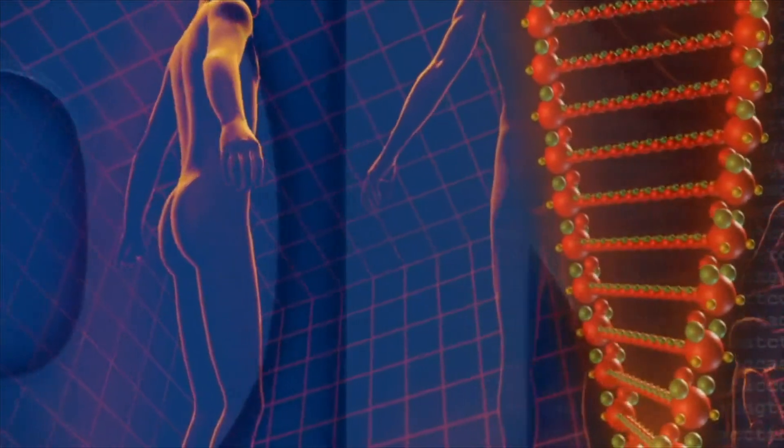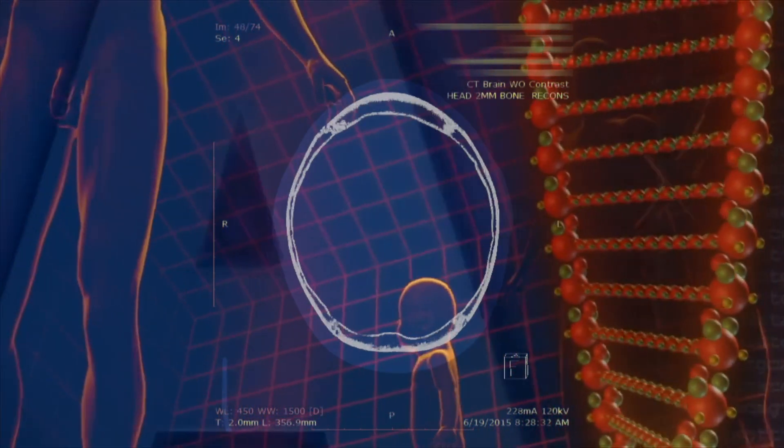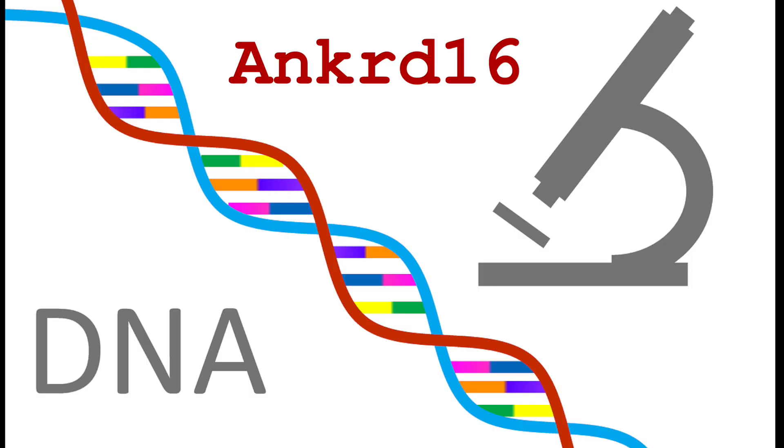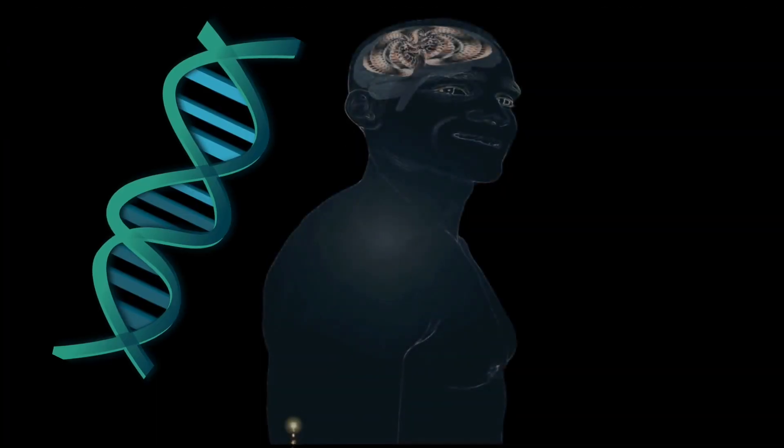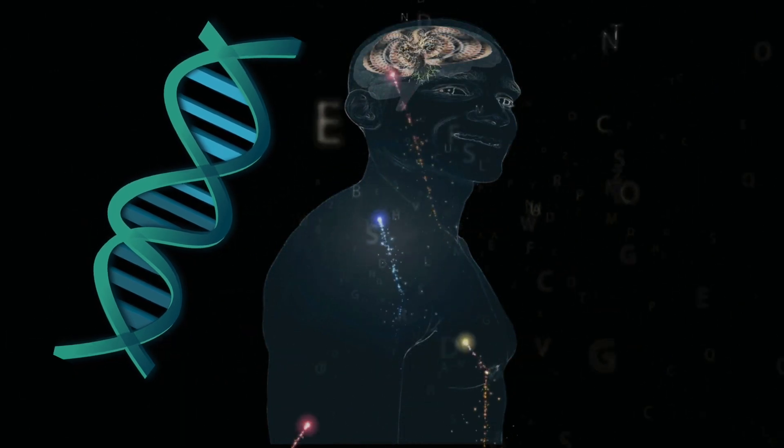Genetics explain around 70% of the reason that we are prone to neurodegenerative diseases like Alzheimer's. Now scientists have figured out how to prevent it. It all comes down to the ANKRD16 gene. We function and grow because our cells transmit genetic information to proteins.